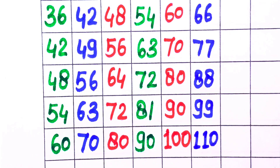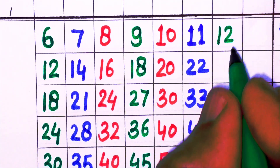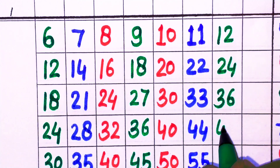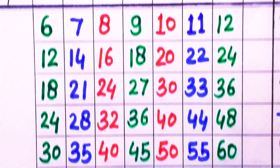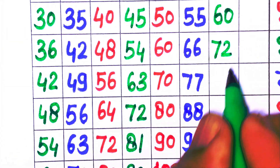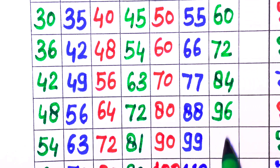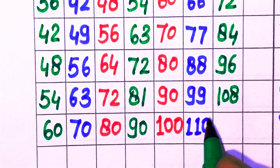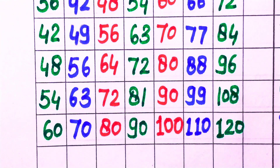12 × 1 = 12, 12 × 2 = 24, 12 × 3 = 36, 12 × 4 = 48, 12 × 5 = 60, 12 × 6 = 72, 12 × 7 = 84, 12 × 8 = 96, 12 × 9 = 108, 12 × 10 = 120.